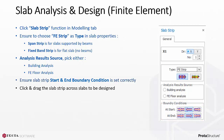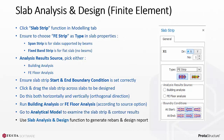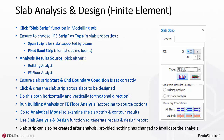Click and drag the slab strip across slabs to be designed. Do this both horizontally and vertically — that is, in the orthogonal direction. Run building analysis or FE floor analysis according to the chosen source option. Go to the Analytical Model to examine the slab strip and contour results, for example the moment contour. Use the Slab Analysis and Design function to generate rebars in the design report. Note that slab strips can also be created after analysis, provided nothing has changed to invalidate the analysis.